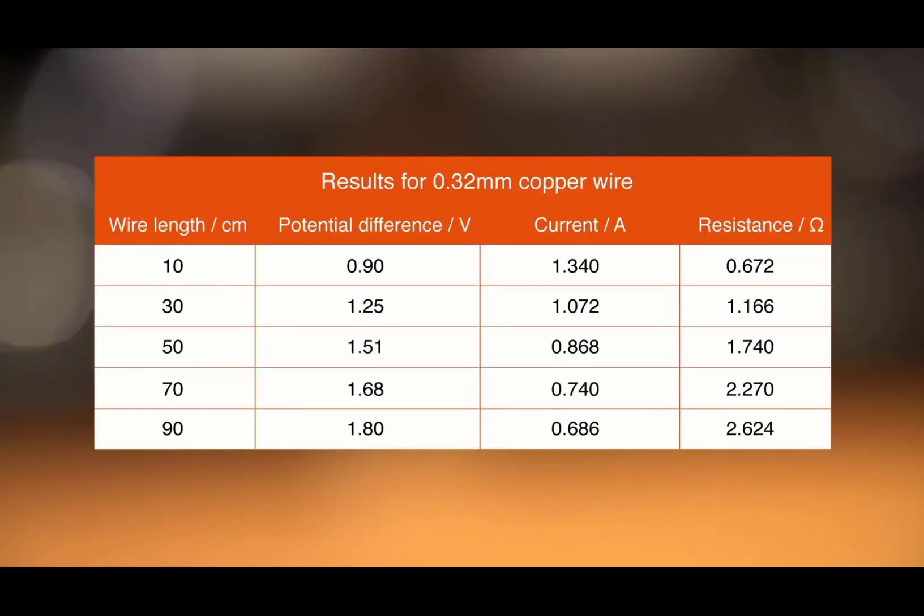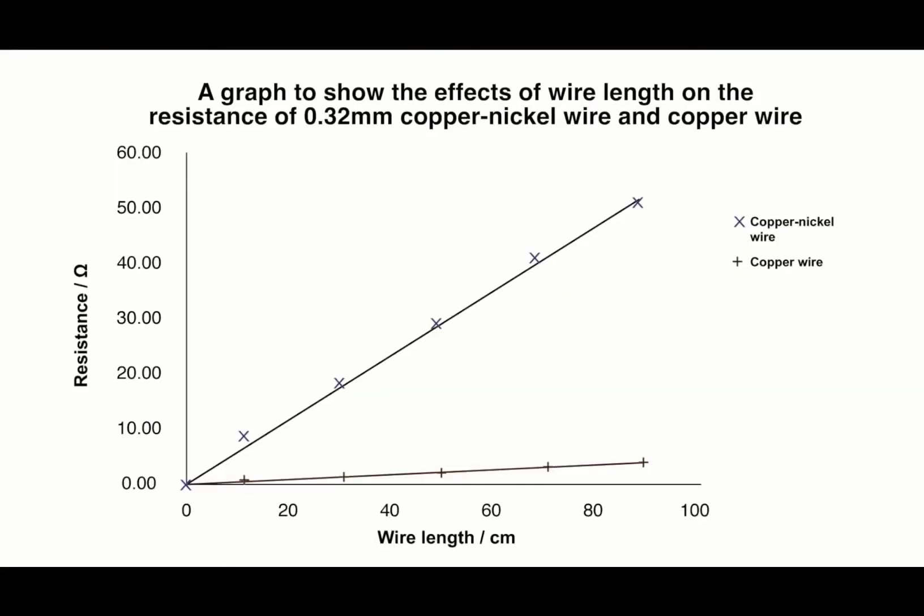The additional data is plotted onto the graph so that the factors that affect the resistance of the wire can be compared. Each line is labelled so it can be identified.